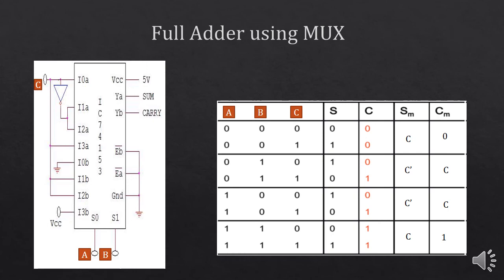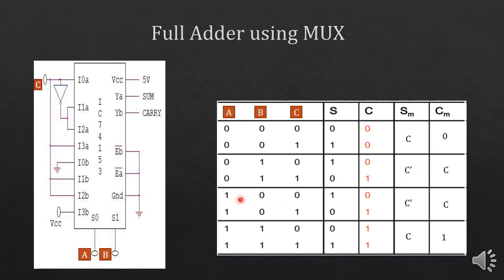In the next task you have to implement a full adder using multiplexer. This is the truth table of the full adder. We use AB as the select pins and C as the data pin. For the sum output: when the selection is 00 the output equals C, so we write C. When the selection is 01 the output is the complement of C, so we write C bar. When the selection is 10 the output is C bar. When the selection is 11 the output equals C, so we write C.